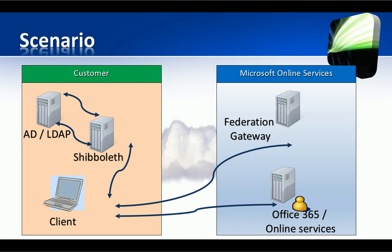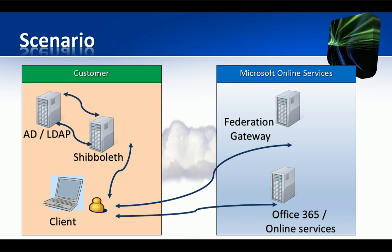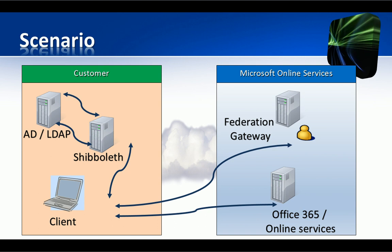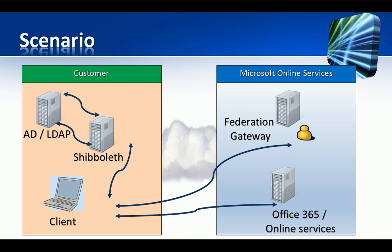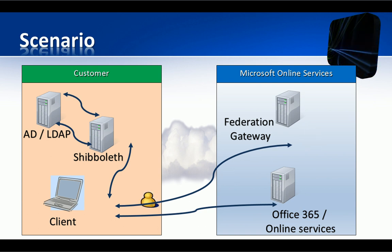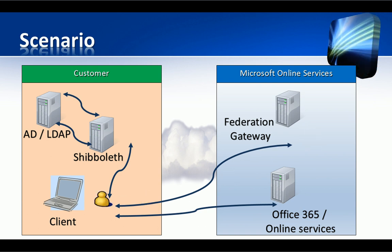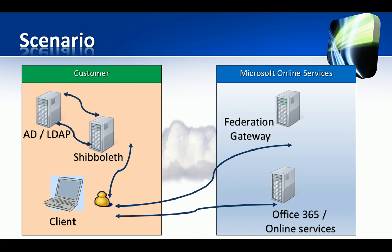So when a user tries to access an Office 365 service like email, SharePoint or other online Microsoft resources, it redirects the user to its Federation service which is the only token service which Microsoft can accept tokens from. The Federation gateway knows which is our identity provider and sends the user there, Shibboleth in this case.